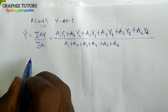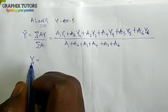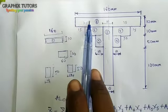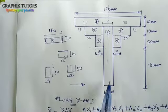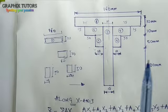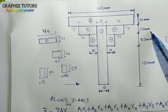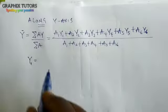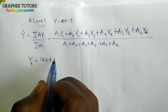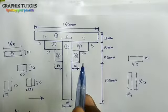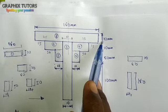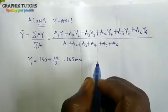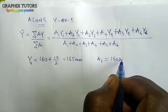For y1: I need to travel 160 (which is 100 + 50 + 10) to reach figure 1, and the thickness is 10, so y1 = 160 + 10/2 = 165 mm. The area A1 doesn't change — it still remains 1,600 mm².